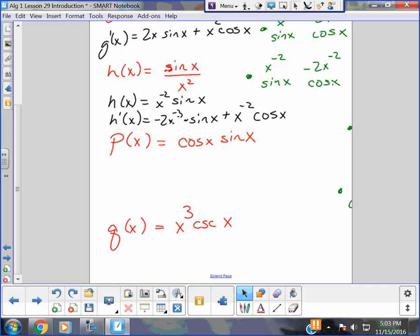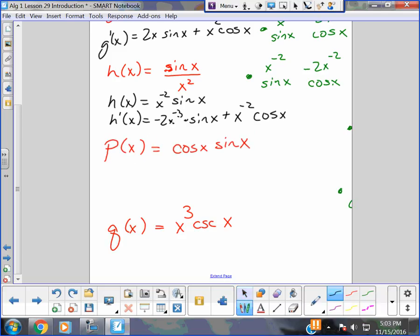Last couple here. Again, p of x equals cosine x times sine x. And again, I am thinking derivative this way. My board's got a dead spot there. I am thinking f prime g plus fg prime. I see cosine x as my f. I see sine x as my g because I keep the order. So when I do p prime of x, the derivative of cosine is negative sine. Then I write that I did cosine. The derivative of sine is cosine.